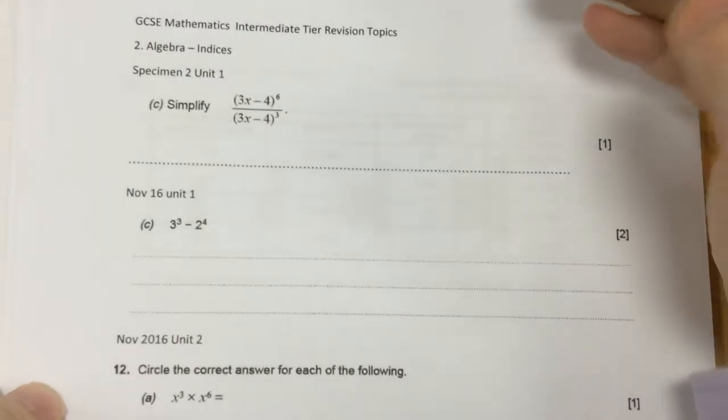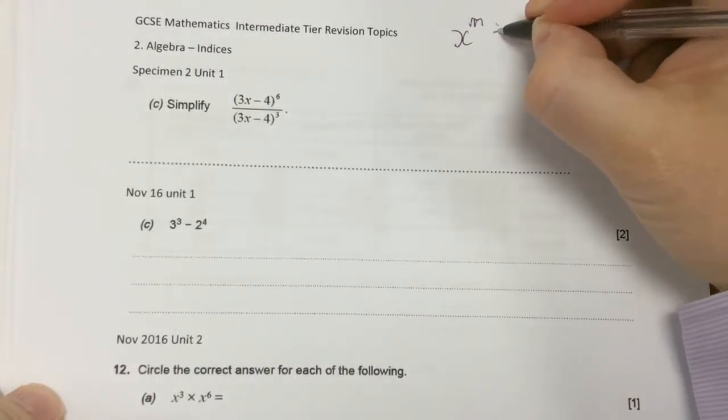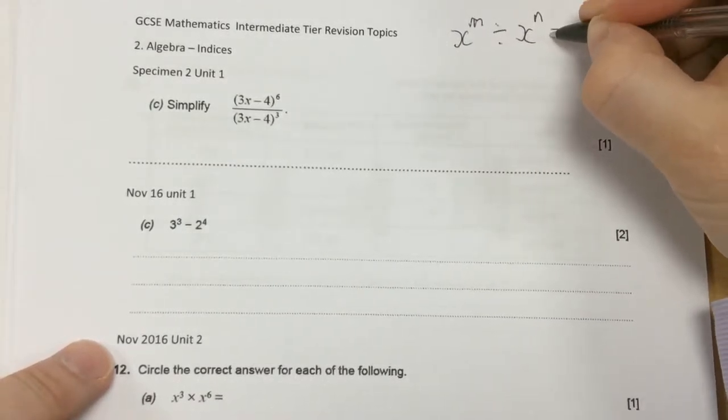the line means divide. When we divide indices, you take the powers away. So if I'm doing x to the m divided by x to the n, it just becomes m take away n.